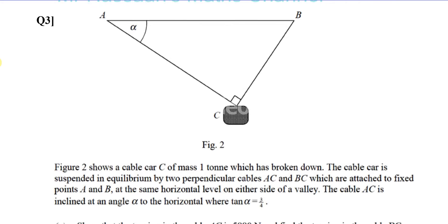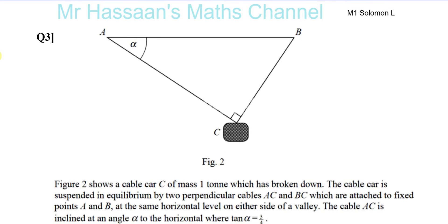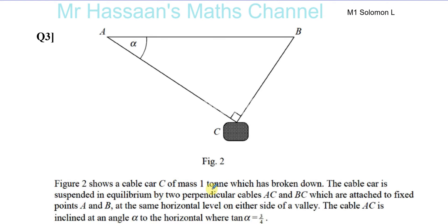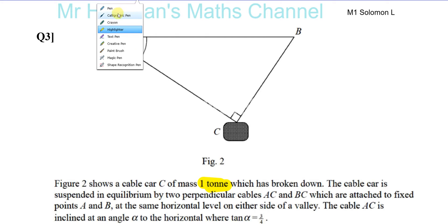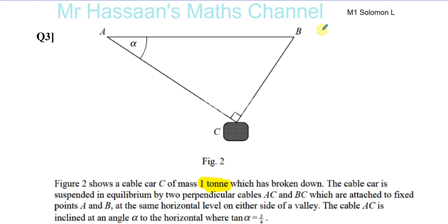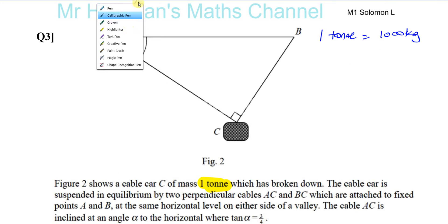The question says: figure two shows a cable car of mass one ton. One ton in SI units is 1,000 kilograms — you should know that conversion. The cable car has broken down and is suspended in equilibrium.